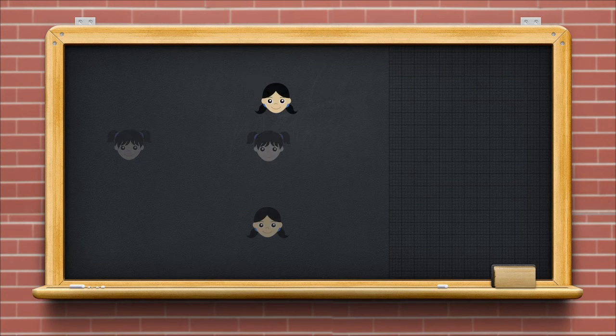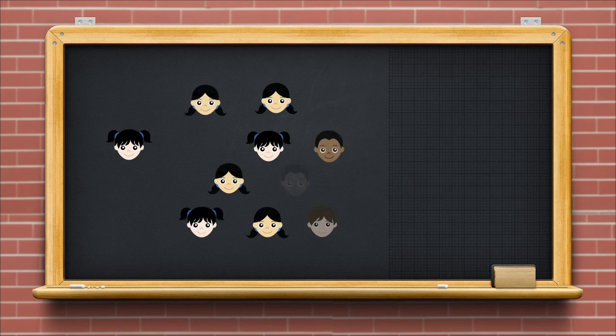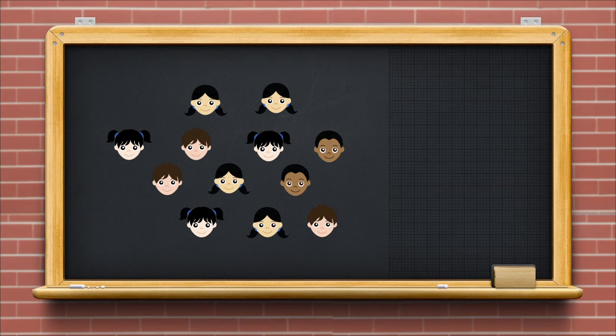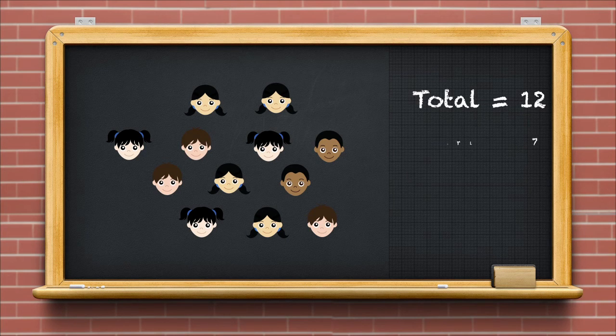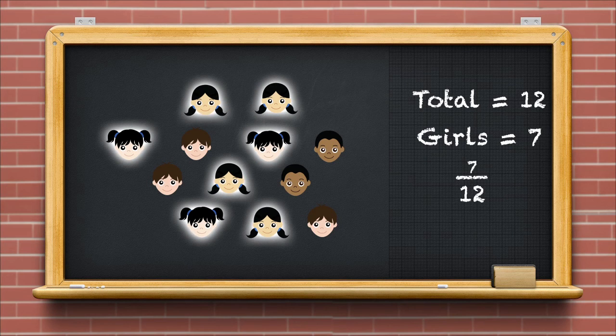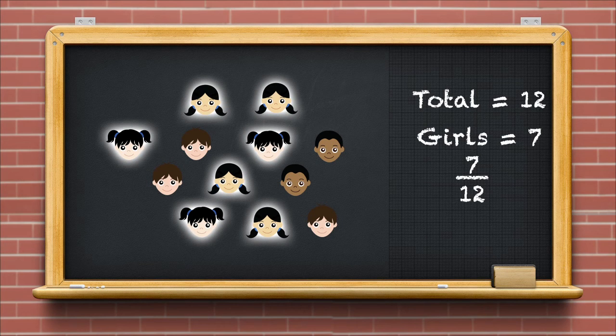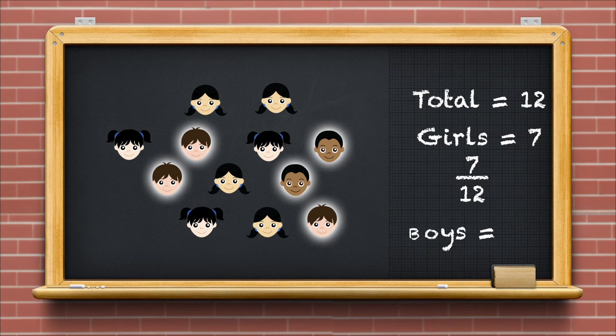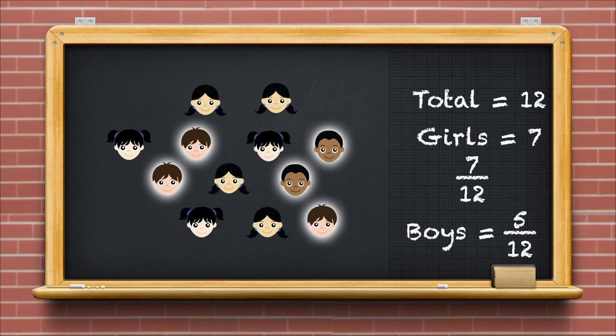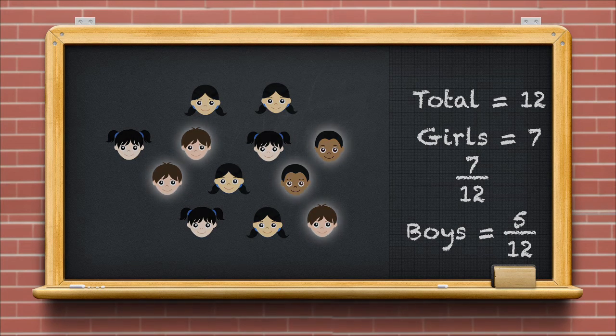A collection or a group is also called 1 whole. This can also be divided. For example, here is a group of 12 students. If the number of girls is 7, then we say that 7 out of 12 students are girls. Ask students to identify how many are boys. 5 out of 12 are boys.